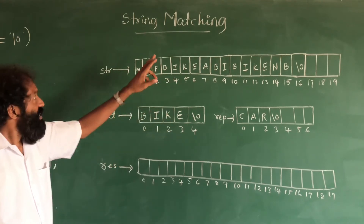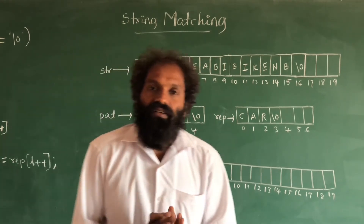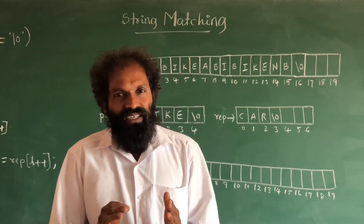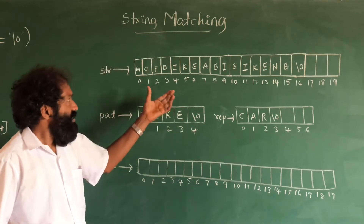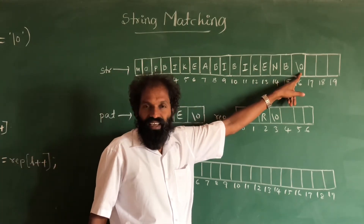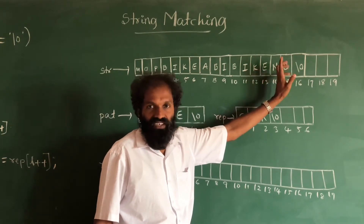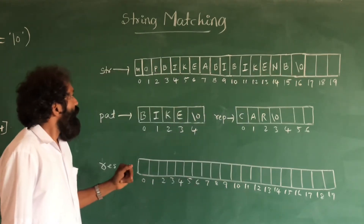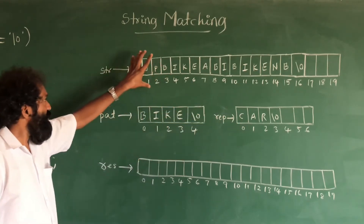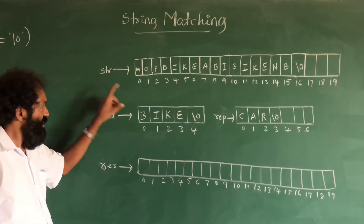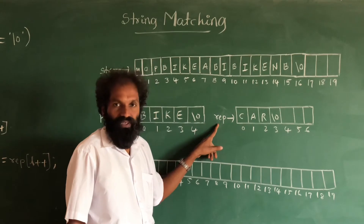This is string matching. String matching comes under the topic of strings. A string is an array of characters, and it always ends with a null character. This null character is not a part of the string. Here we have three arrays: one named 'str', one named 'pat', and one named 'rep'.